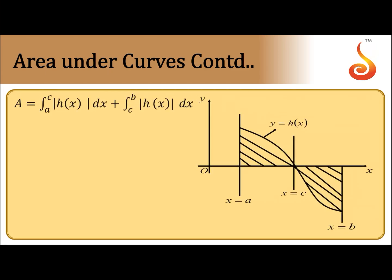For the area under the curve y = h(x), where the graph runs from x = a to x = b, some portion of the curve may be positive and some may be negative. In such a case, we divide the total interval into parts — say x = a to x = c is positive, and c to b is negative. We take the modulus value: integral from a to c of |h(x)| dx plus integral from c to b of |h(x)| dx. After evaluating the integral, take the modulus to get the numerical value.